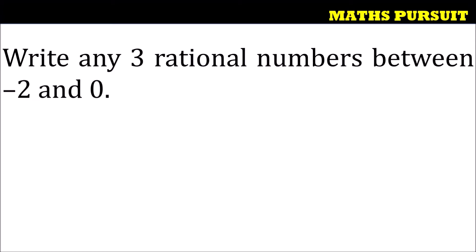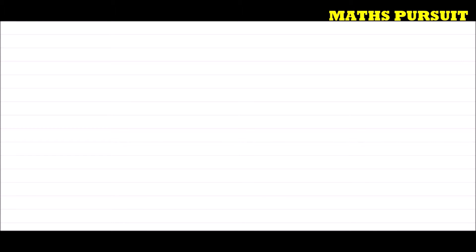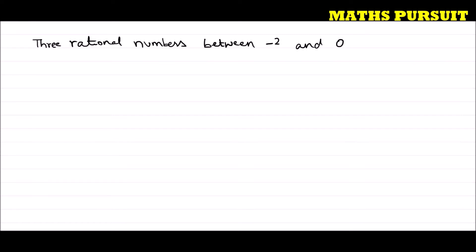The question is asking us to find out three rational numbers between minus 2 and 0. Let us see how we need to proceed so that we can find out three rational numbers between minus 2 and 0.